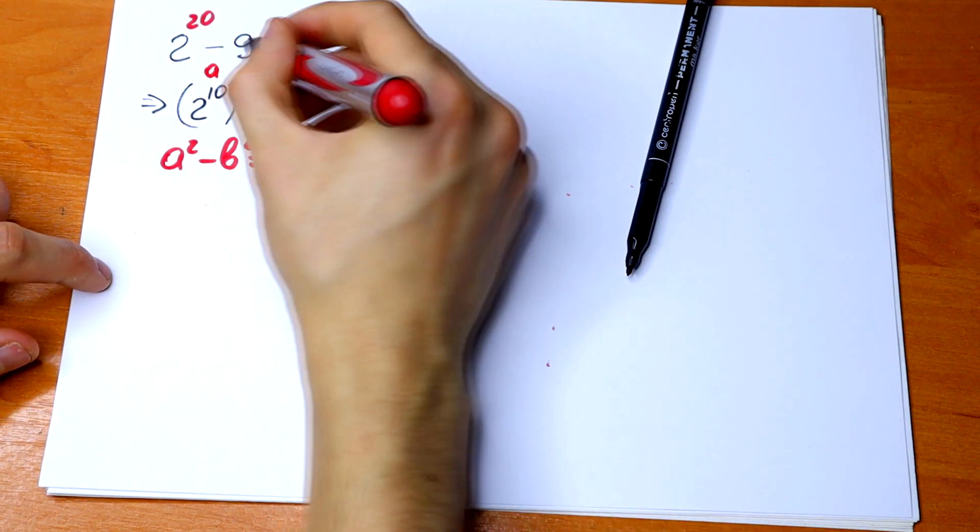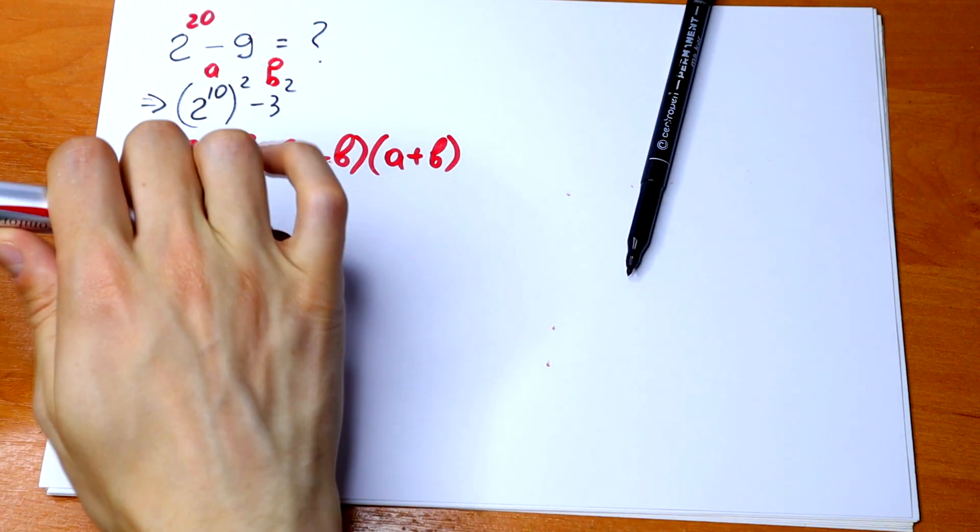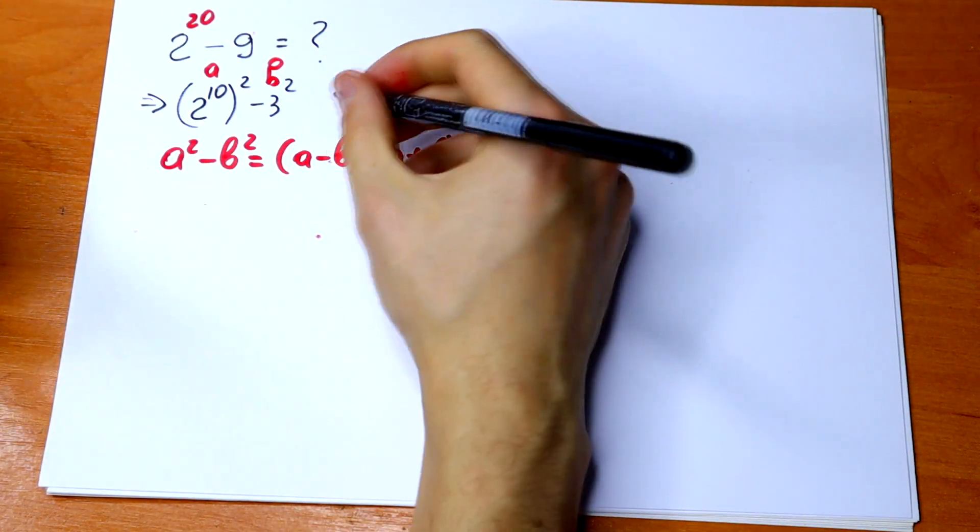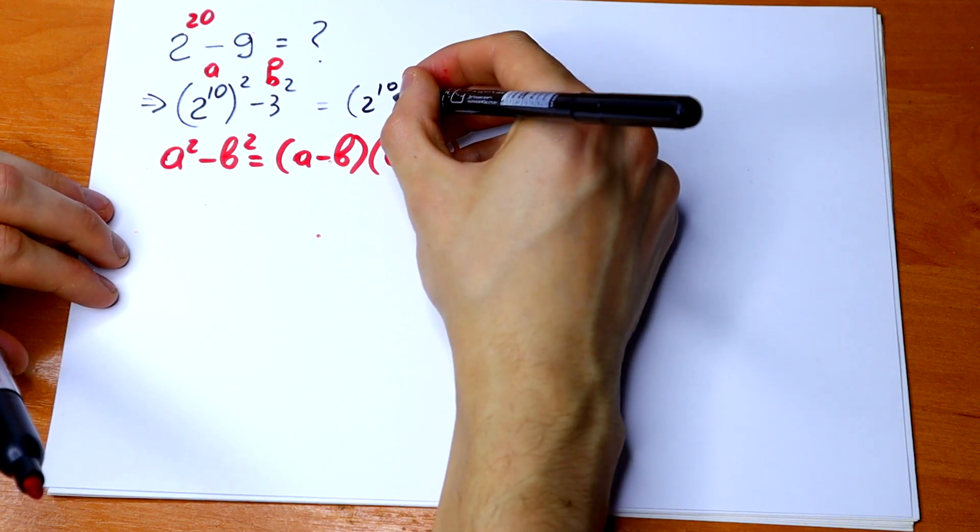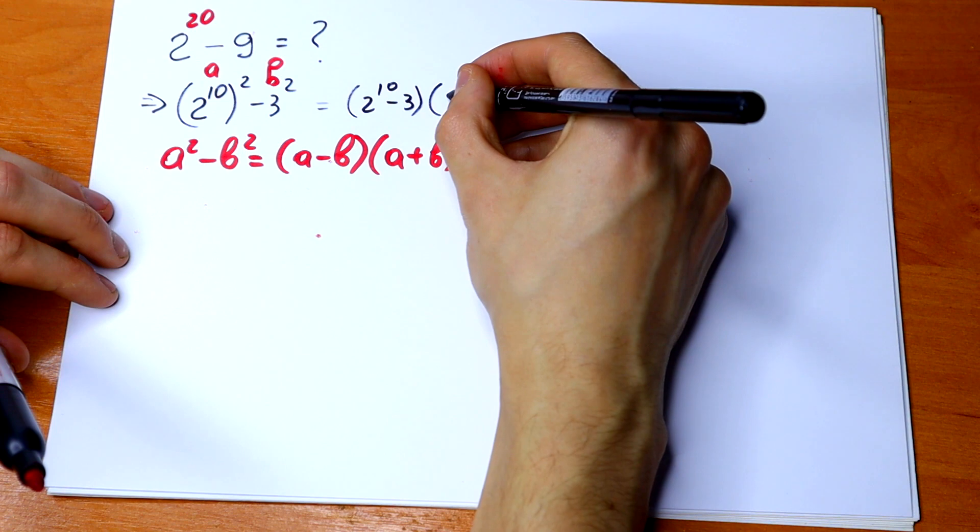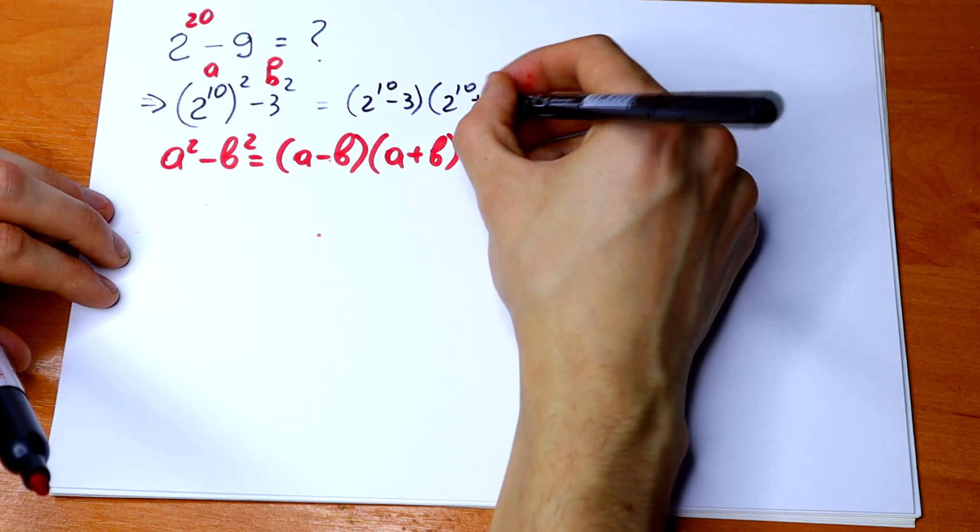This is our a and this is our b. So let's split it into an identity. We will have 2 to the 10th power minus 3, times 2 to the 10th power plus 3.